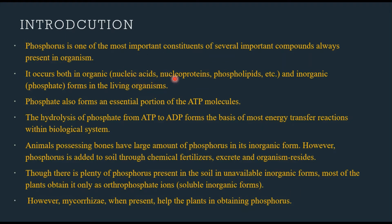Phosphorus is present in nucleic acids — specifically in the nitrogen bases, phosphorus, and sugar moiety — forming nucleotides, which are polymers called nucleoproteins. Phospholipids, composed of phosphate plus lipids, are essential in the formation of the plasma membrane.